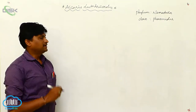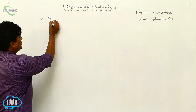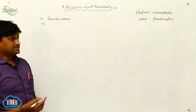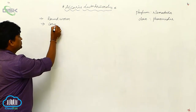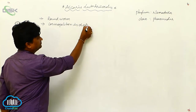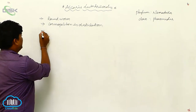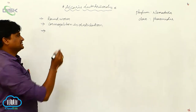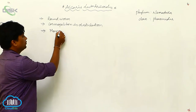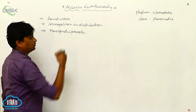Ascaris lumbricoides belongs to Phylum Nematoda, Class Phasmaria. It is commonly called the roundworm. It has a cosmopolitan distribution, meaning it is spread throughout the world. It infects human beings and completes its life cycle in only a single host, so we call it a monogenetic parasite.